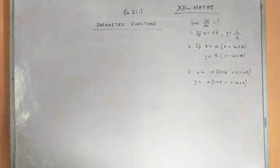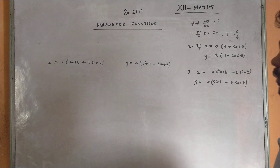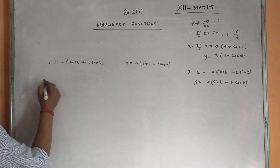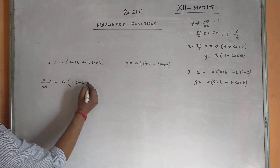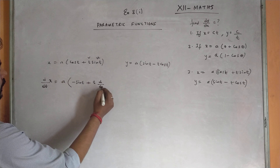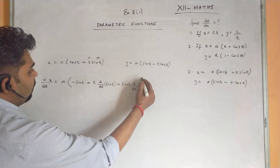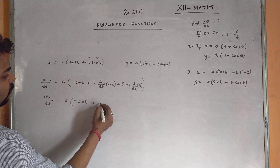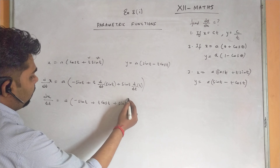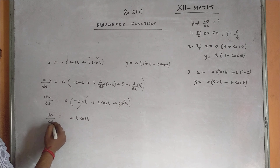Next parametric question: x = a(cos t + t·sin t) and y = a(sin t - t·cos t). Differentiating x with respect to t: dx/dt = a·[-sin t + (t·cos t + sin t·1)] using the product rule. The sin t and -sin t cancel, giving dx/dt = a·t·cos t — equation 1.